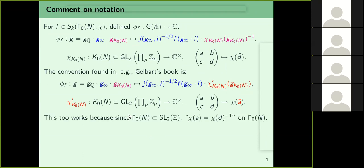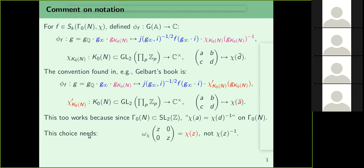There are two different conventions for defining φ_f and both conventions work because one involves χ(ā) and the other involves χ(d̄)⁻¹. If you look at Γ₀(N), it is contained in SL₂, and on SL₂ a times d equals one, so both conventions really work. The main difference is that the central character becomes the inverse of whatever it was under the other convention.